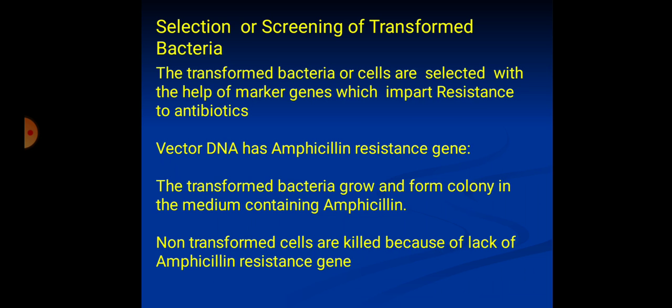The next step is selection or screening of transformed bacteria. Not all bacteria will take up the recombinant DNA — some have taken it and some have not. Transformed bacteria are selected with the help of marker genes present in the vector DNA, which impart resistance to antibiotics. For example, if the vector DNA has an ampicillin-resistance gene and the transformed bacteria are cultured in a medium containing ampicillin, only those bacteria will grow, while non-transformed bacteria will be killed.